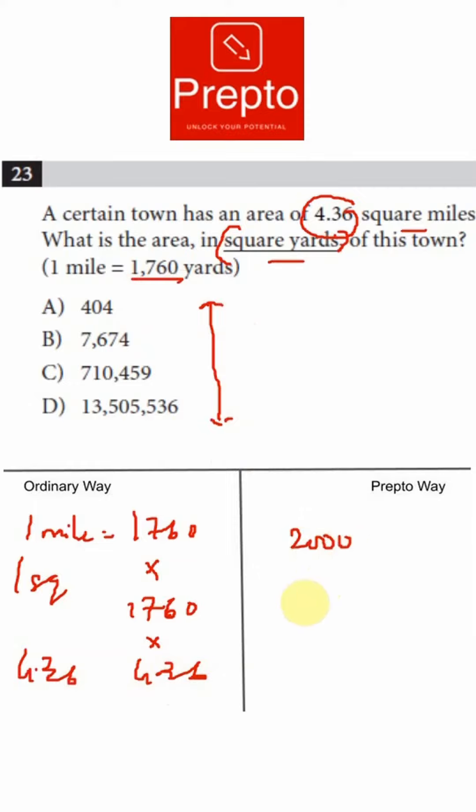So 1 square mile will be 2000 squared, which is 4 followed by 6 zeros.